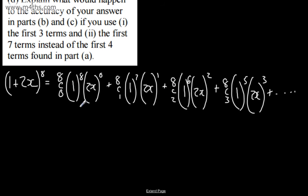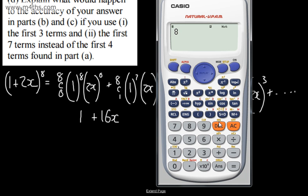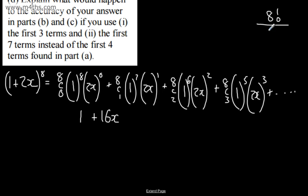8C0 is 1 times 1 times 1, that's just 1. 8C1 is 8, times 1 times 2, that's 16, so 16x. Now 8C2 gives us 28. We can find that on a calculator. Alternatively, if you wanted to work it out manually, this would be 8 factorial over 6 factorial 2 factorial. This is the same as 8 times 7 times 6 factorial over 6 factorial times 2 factorial. 2 factorial is 2, so the 6 factorials cancel. We're left with 8 times 7 over 2, which is 28.